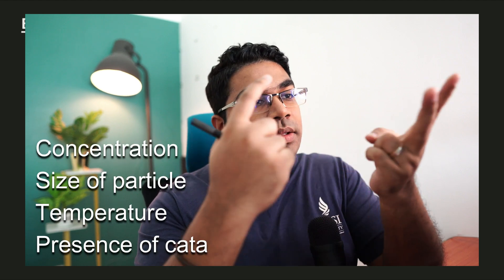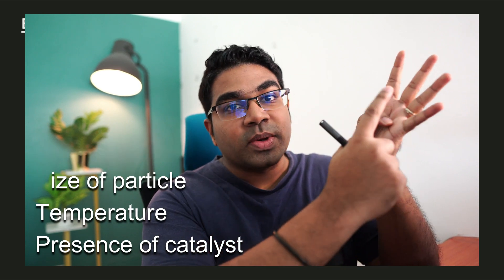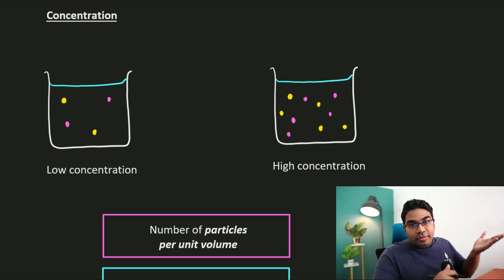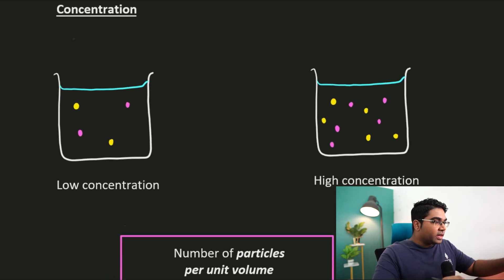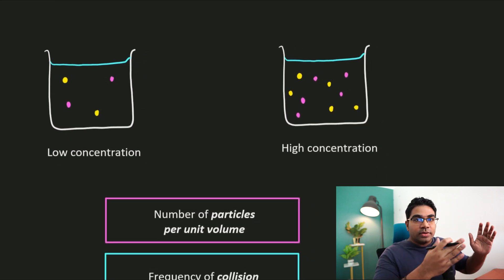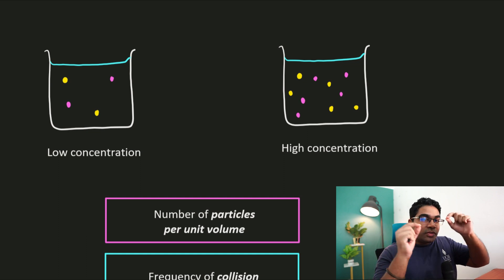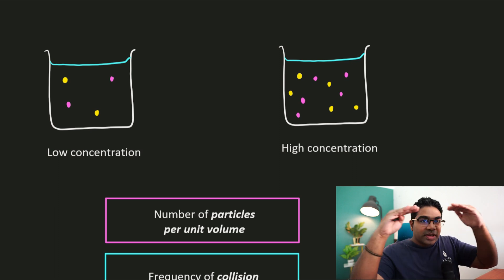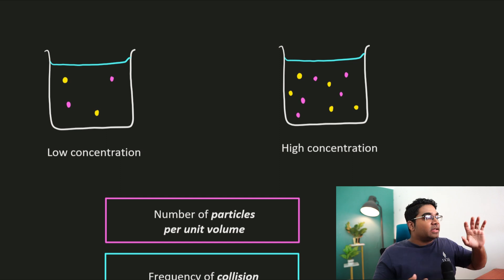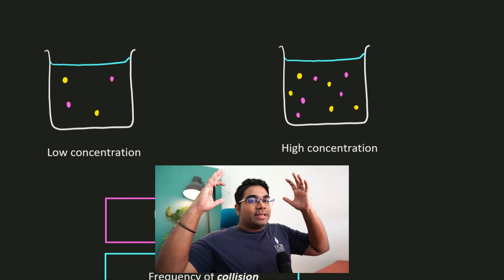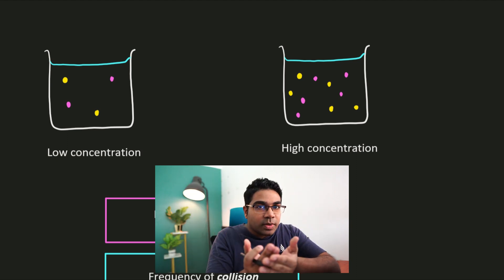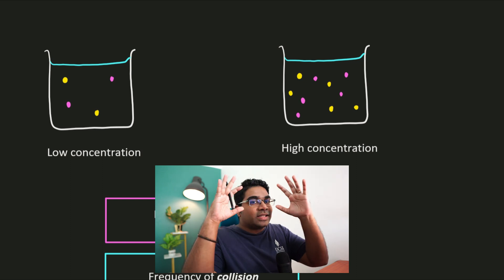Let's look at four factors that affect the rate of reaction: the concentration of the reactant, the size of the reactant particle, the temperature, and the presence of catalysts. First, let's look at concentration. Here I have two beakers — one with low concentration and one with high concentration. In a solution with low concentration, the number of solute particles in a fixed volume is less compared to a high concentration solution. The proximity of particles in the same space is what matters.